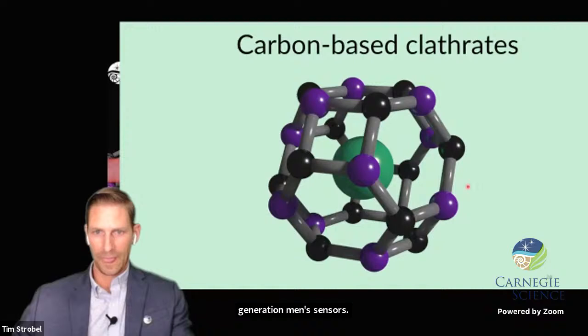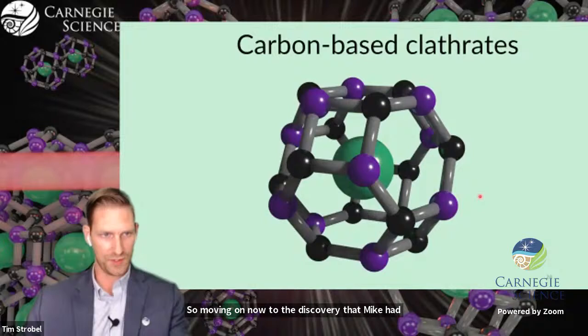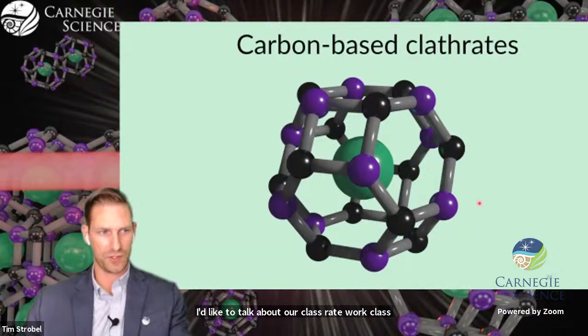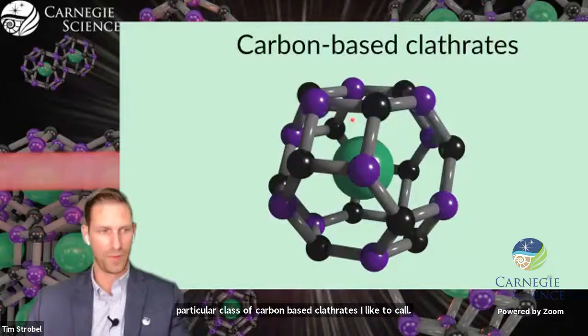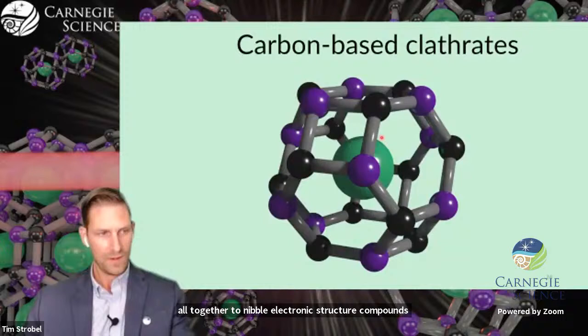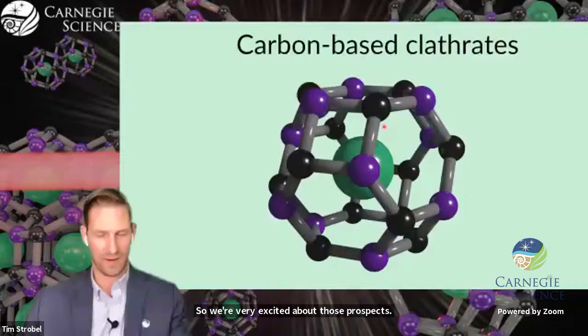So moving on now to the discovery that Mike had mentioned with our carbon-boron cages, I'd like to talk about our clathrate work. Clathrates are polyhedral cage structures where a host structure traps a guest atom or molecule. I like to call this particular class of carbon-based clathrates super-hard, super-strong, superconducting, all-together tunable electronic structure compounds with glass-like thermal conductivity.